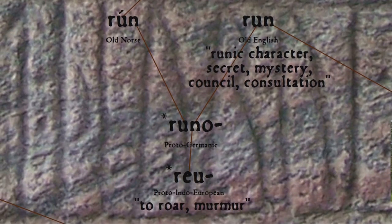The word 'rune' comes via Proto-Germanic, probably from an Indo-European root meaning roar or murmur, which also gives us the words rumor, riot, and raucous. The word mostly faded from the language along with the runes themselves after the Anglo-Saxon period, only to be added back in by scholars in the 17th century and later who were studying those old runes.